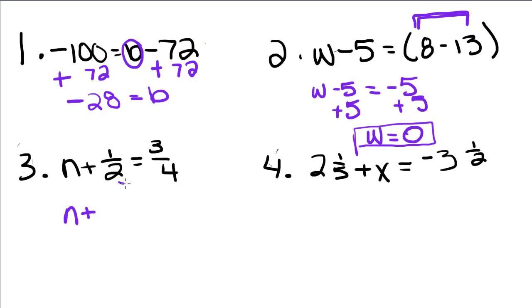So if you look, our least common denominator would be 4. So I multiply the top of this, and the top of this, and the bottom of this by 2.